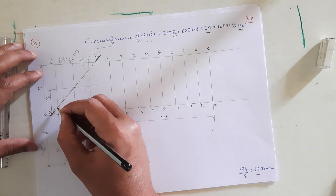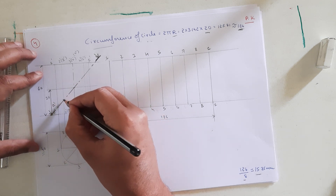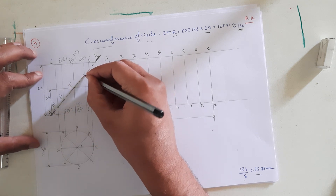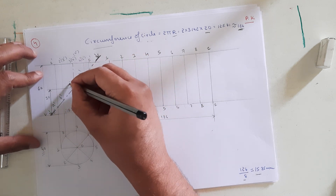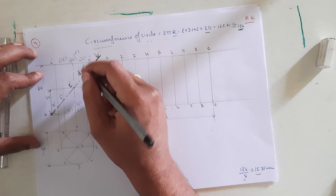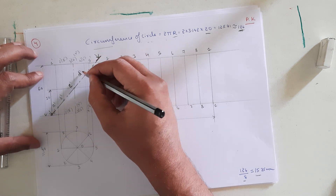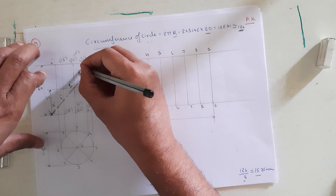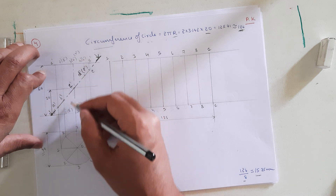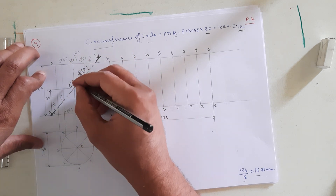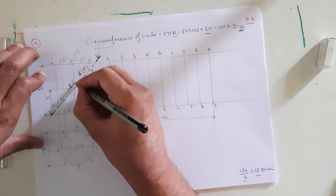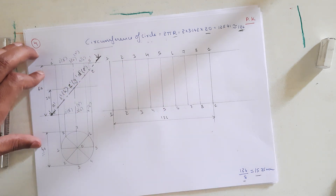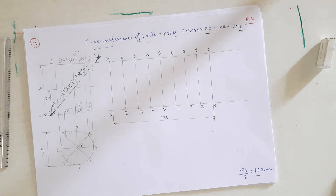Now I locate all points where the section plane cuts the generators. The section plane cuts generator 1' at A', generator 2' at B', generator 3' at C', generator 4' at D', generator 5' at E', generator 6' at F', generator 7' at G', and generator 8' at H'. We need to locate all these reference points.